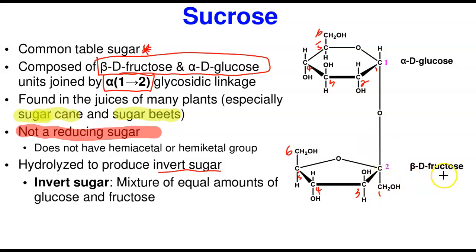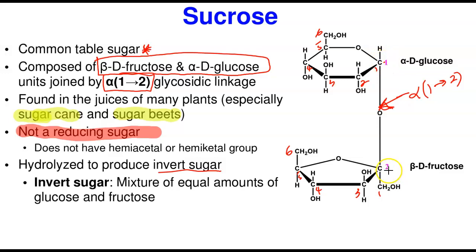The OH group of the fructose is facing up — that's why it's beta. So we have beta-D-fructose and alpha-D-glucose. This bond is the alpha-1,2 glycosidic linkage. It is not a reducing sugar because the anomeric carbon here is carbon one and the anomeric carbon of fructose is carbon two — both have been used to form this glycosidic bond. Therefore they are not free for oxidation by oxidizing agents. Sucrose is the only disaccharide that is not a reducing sugar.